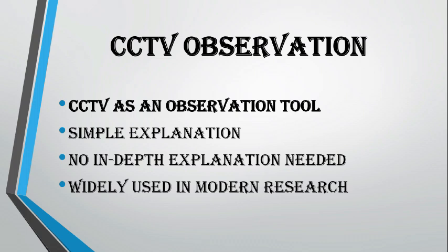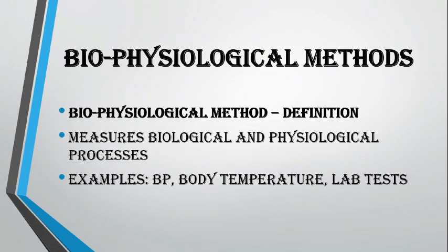An examiner evaluating a nursing student during a blood pressure procedure might also use a checklist to assess whether certain steps were followed — for example, whether handwashing was performed or whether the procedure was explained to the patient. In summary, a checklist is a pre-prepared list of items that helps the observer verify whether specific actions or elements are present or not during an activity. Together, the rating scale and the checklist are valuable tools in making the observation method both reliable and efficient.